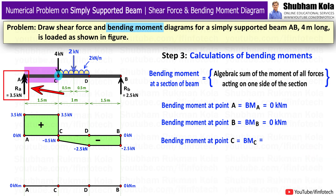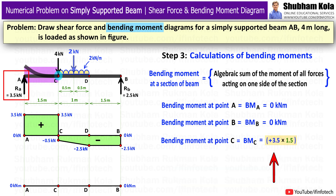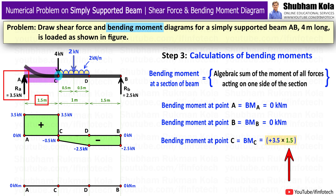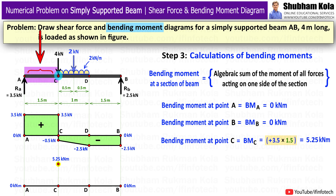BM at point C: at the left of C, reaction RA = 3.5 kN causes sagging (positive). BM at C = +RA × 1.5 m = +3.5 × 1.5 = 5.25 kNm. This positive value is marked above the reference line. Since there is no load between A and C, these two points are connected with an inclined line.